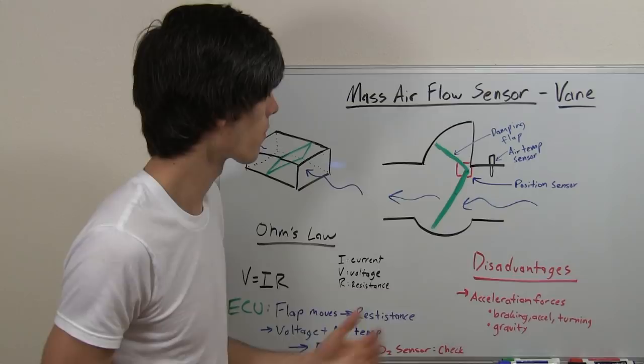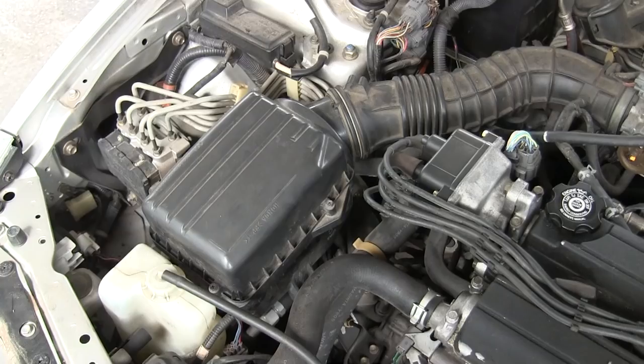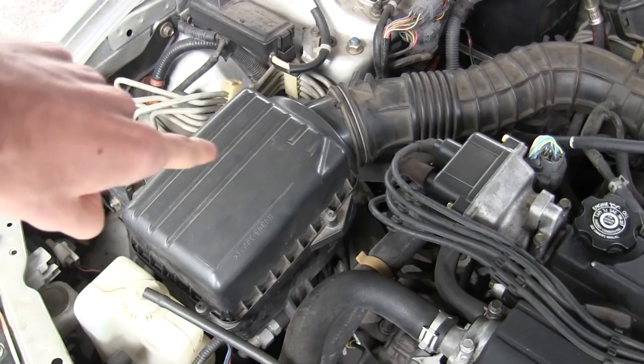And that's a vane type mass airflow sensor. I'm going to show you real quick where this will be located on my car. Just like the hot wire type mass airflow sensor, a vane type mass airflow sensor would also be located directly behind the air filter. So it would be right here on this vehicle if it were to have that as a feature to measure airflow.